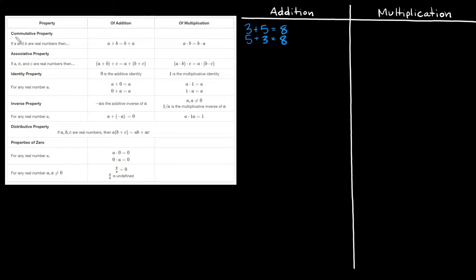Now let's do the commutative property of multiplication. Here it says A times B is equal to B times A. Similarly, if all you're doing is multiplying numbers together, doesn't matter if they're positive or negative, you can move numbers around and you'll still get the same answer. So if I had 2 times 5, that's equal to 10. What if I had 5 times 2? That's still equal to 10.